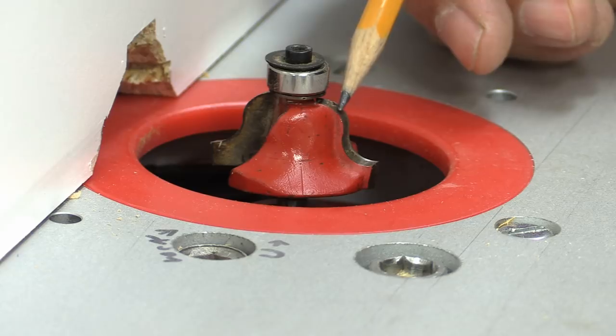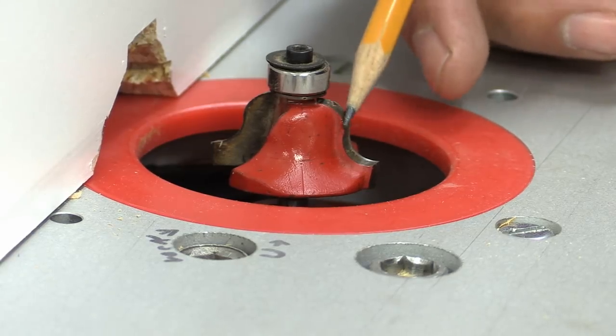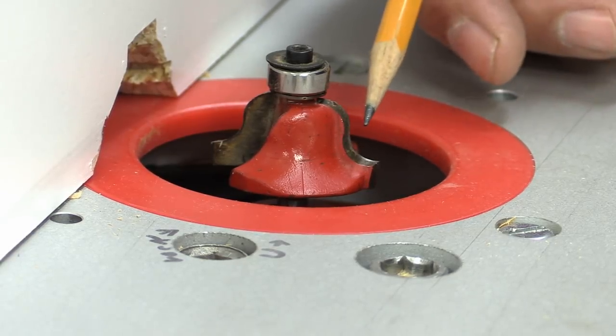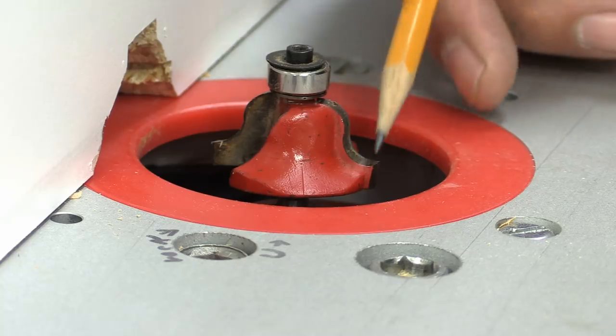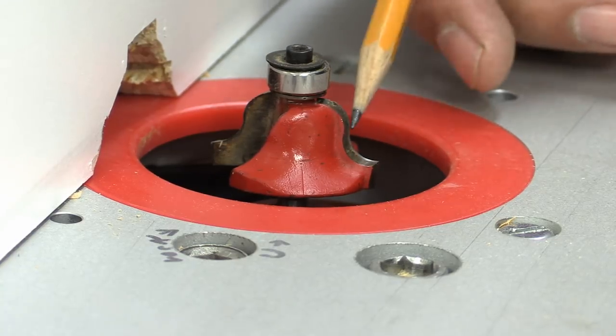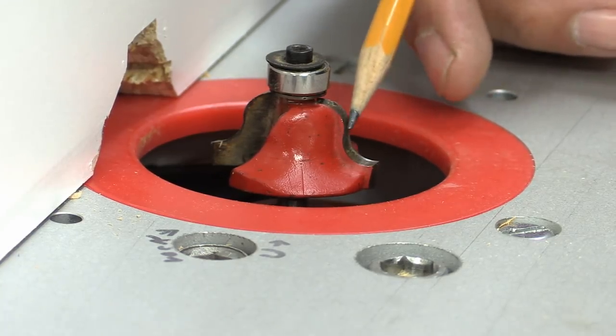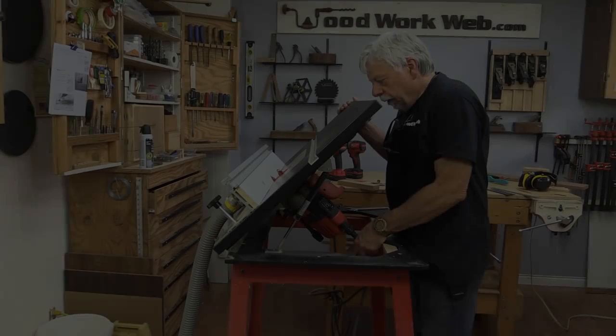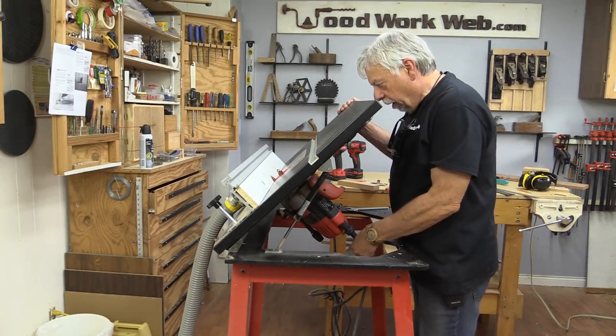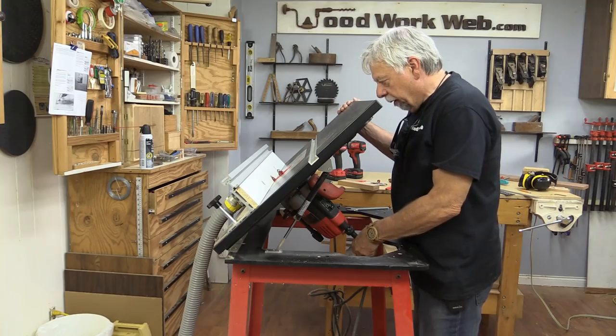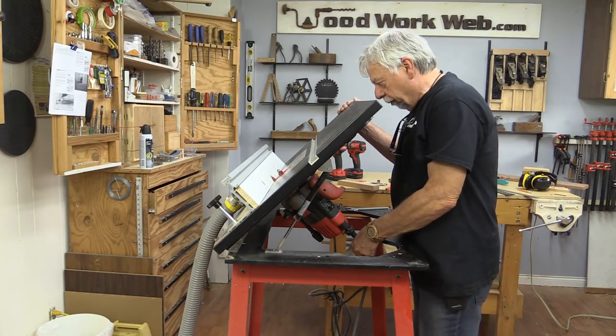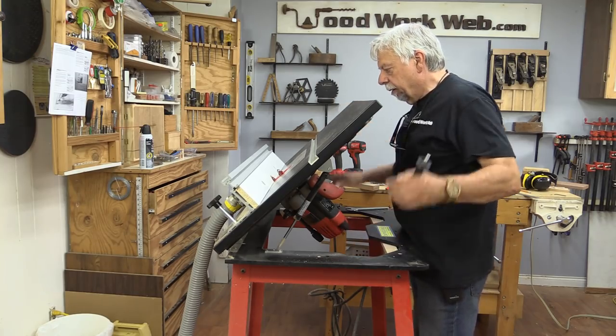The next bit that I'm using is something called an OG or Roman OG. And I'm going to show you a couple of things. I'm going to show you a couple of different profiles that we can get from it. But I'm also going to show you how you can use it as a round-over. So again, I need to very carefully make sure that the bottom of that round-over is right at the table level. Okay, that's good.